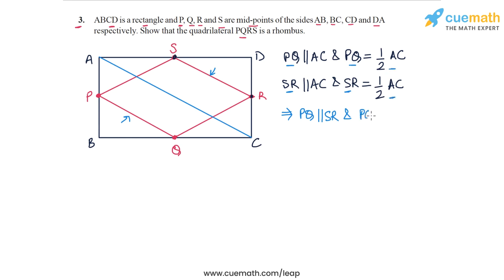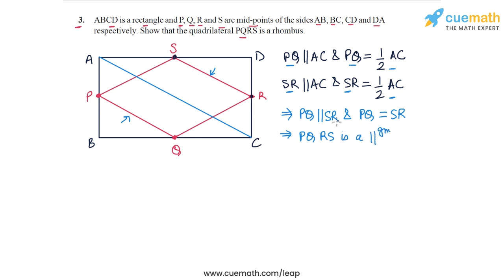PQ is parallel to SR, and also PQ and SR are equal to each other because both are equal to half of AC. So PQ is equal to SR as well, and this means that in quadrilateral PQRS one pair of opposite sides are parallel and equal. So PQRS is a parallelogram.